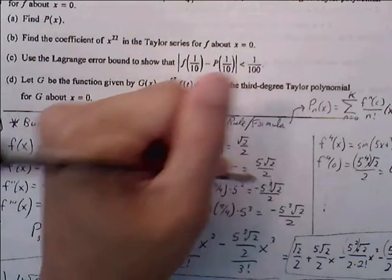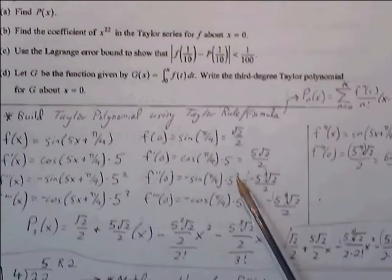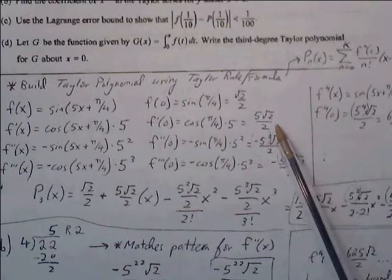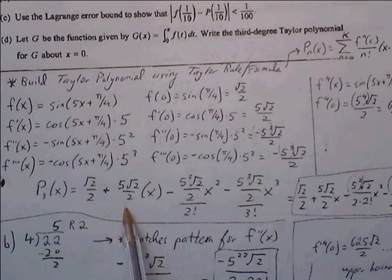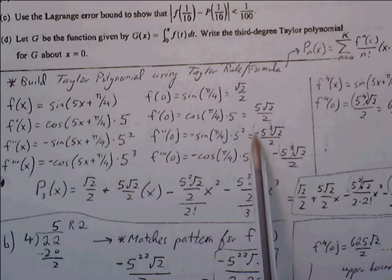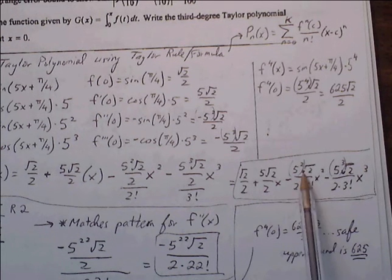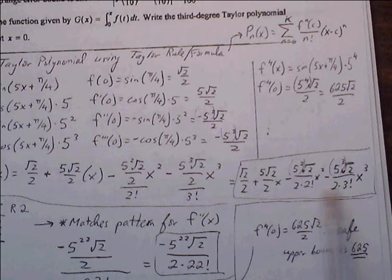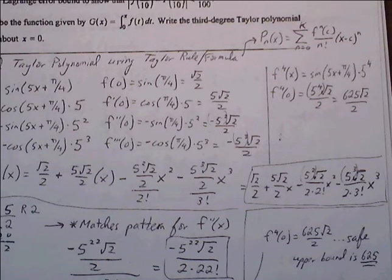Note that the 2 and 3 on the 5s are exponents, not radicals or roots. We can now build our Taylor polynomial. The first two terms form the tangent line equation: √2/2 + 5√2/2 · x. Then we continue with −5²·(√2/2) / 2! · x² and −5³·(√2/2) / 3! · x³. Cleaning this up gives us our third degree Taylor polynomial.